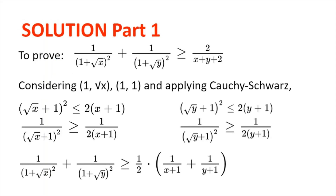Solution. Considering the vectors (1, square root of x) and (1, 1) and applying Cauchy-Schwarz, we get (square root of x plus 1) squared less than or equal to 2 multiplied by (x plus 1). With the same logic, we get (square root of y plus 1) squared less than or equal to 2 multiplied by (y plus 1).